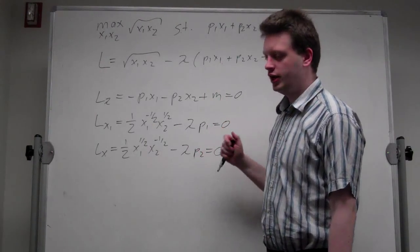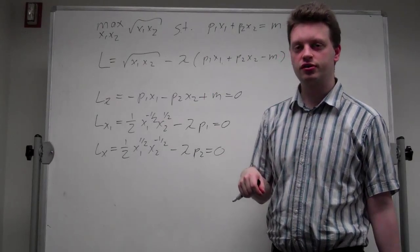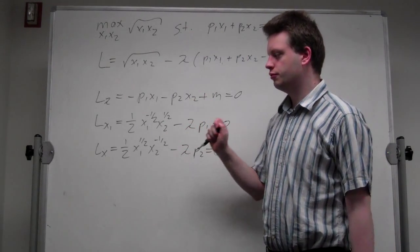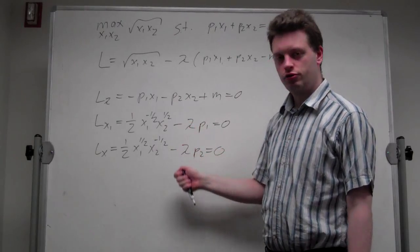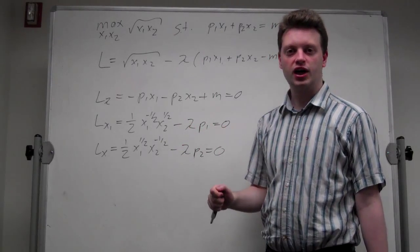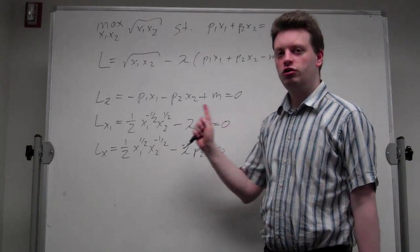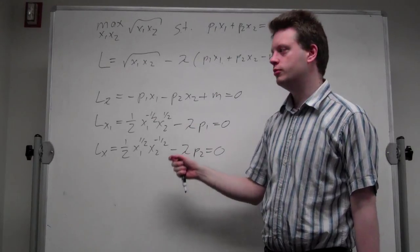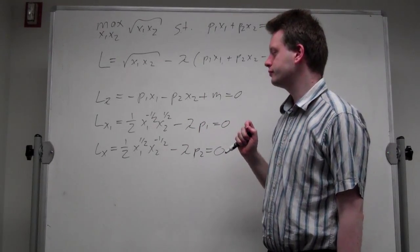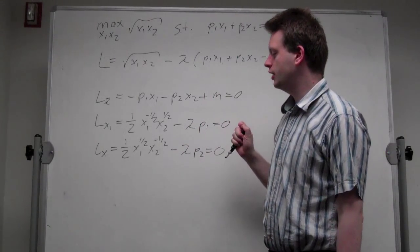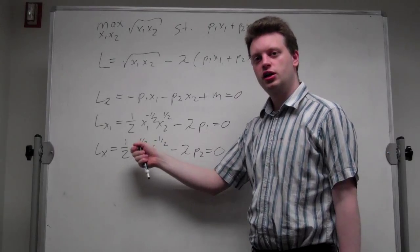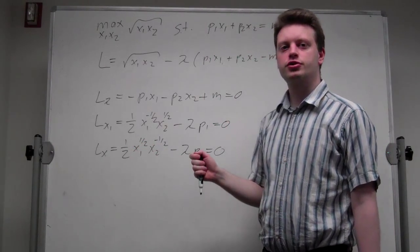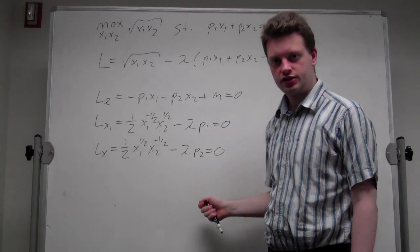So let's apply the implicit function theorem, which tells us to first differentiate all three first order conditions with respect to all endogenous and exogenous variables, then set up the system in matrix form, and use Cramer's rule to solve that system.